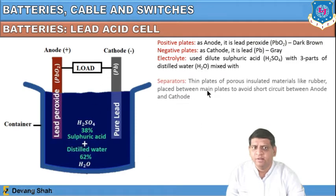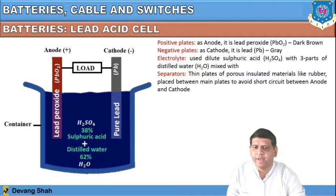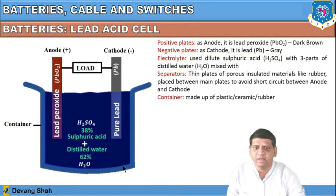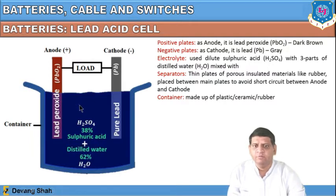Separators are placed between the plates — made of rubber — to avoid short circuit between anode and cathode. The container is made of plastic, ceramic, or rubber and holds the electrolyte. Now we are going to learn about the operation of this lead acid cell through its chemical reactions, ultimately converting chemical energy into electrical energy and vice versa.